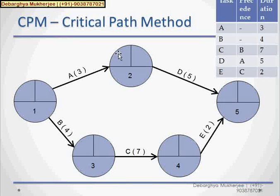So, it is taking 3 days to be completed. And B is taking 4 days to be completed. Now, B is precedence of C. So, at the end of B, we have this path for C. C is taking 7 days where C is precedence of E and it is taking 2 days.